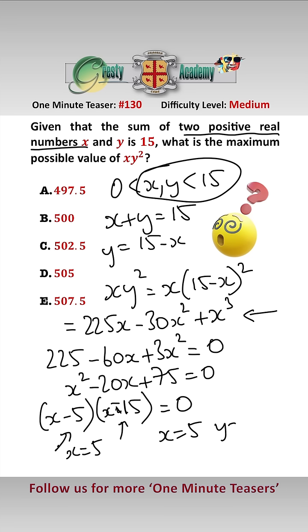x equals 5, i.e. y equals 10, and therefore the maximum value of xy squared is 5 times 10 squared, which is 500, answer B.